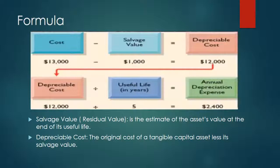To find the annual depreciation expense, you use the straight line formula: take the cost of the asset, subtract the residual value or salvage value to get the depreciable cost, then divide by the useful life in years to get the annual depreciation expense. Salvage value is the estimate of the asset's value at the end of its useful life, and depreciable cost is the original cost of the tangible asset less its salvage value.